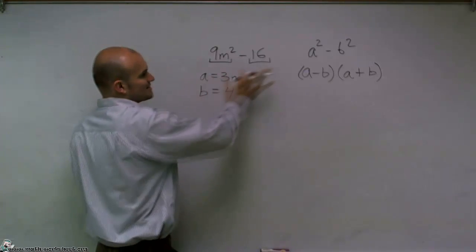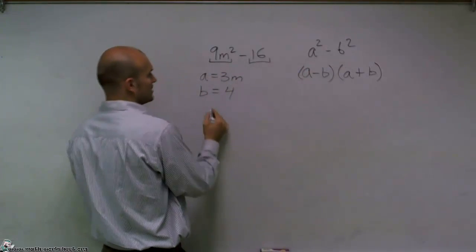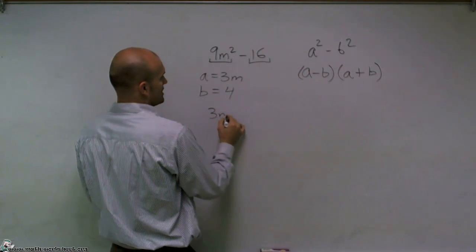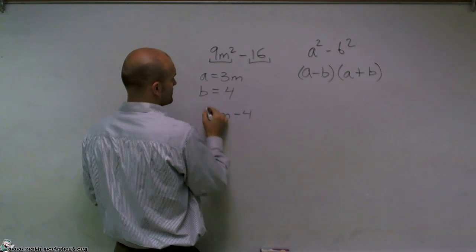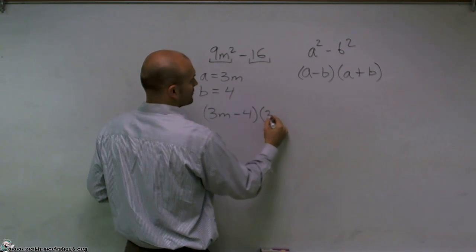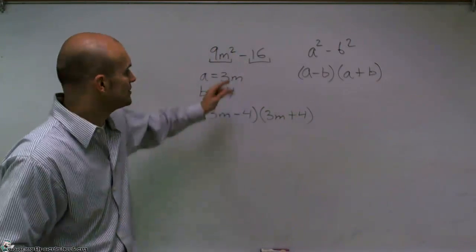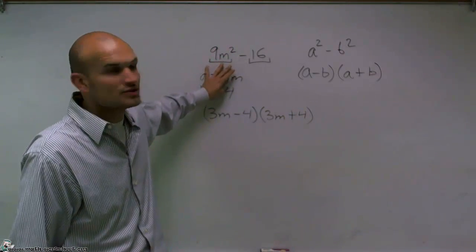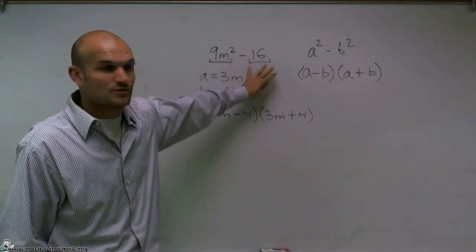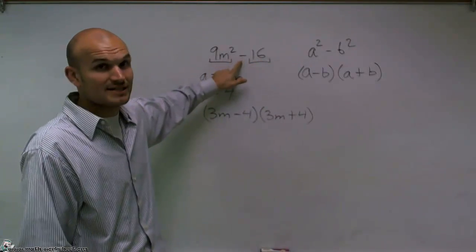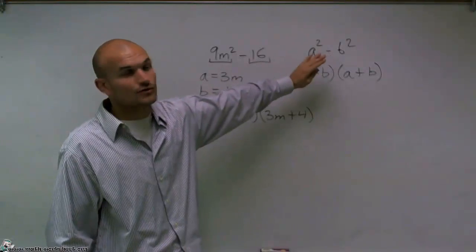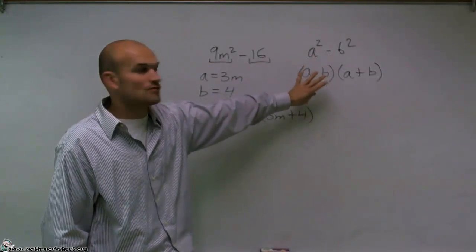So now, if I just simply plug that into this formula, what I have is 3m minus 4 times 3m plus 4. So it's really important to look for your first two terms to be square terms, and your last term to be square terms, then make sure you have the difference. Because if it's the difference, you can work like this. If it's not the difference, it doesn't work like this.